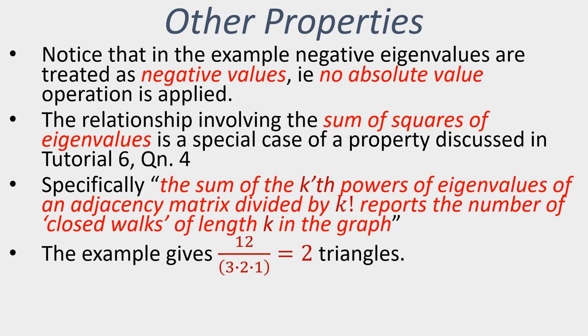So if we looked at the case where we are looking at closed walks of length 3—in other words, the number of triangles in the graph—then what we find is we sum up the cubes of the eigenvalues, we divide that by 6, and that tells us that the graph we were working with contains exactly two triangles.